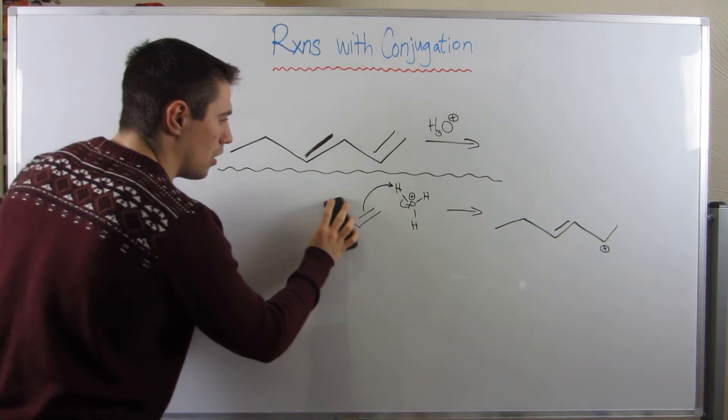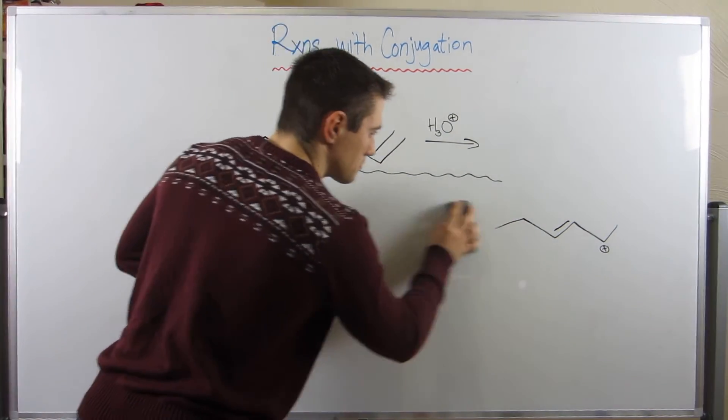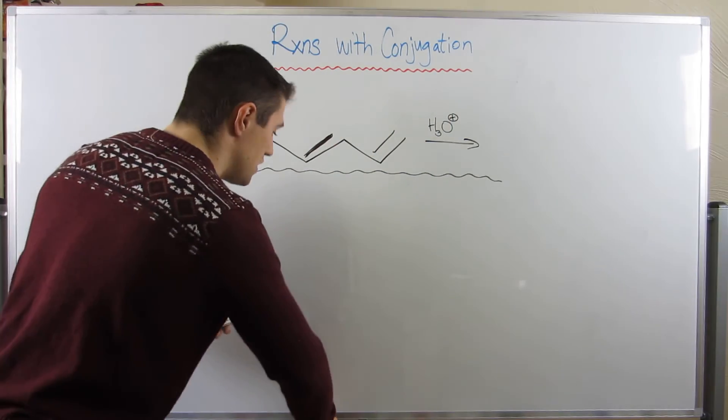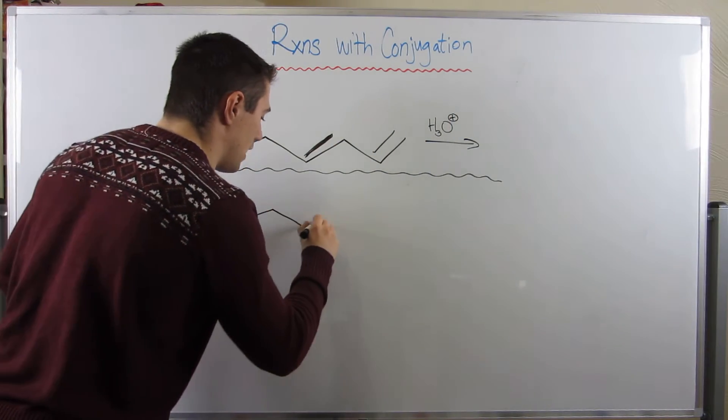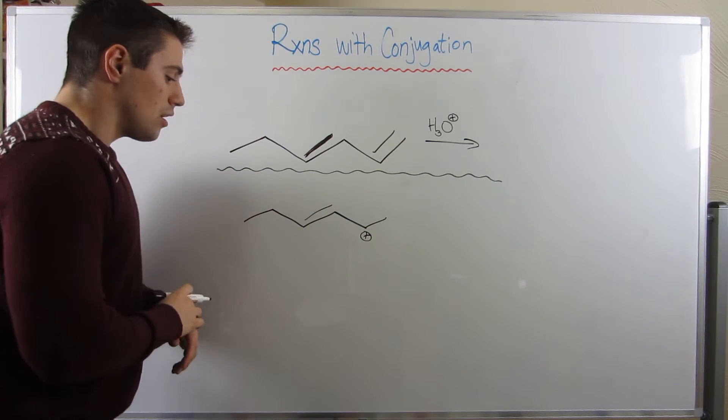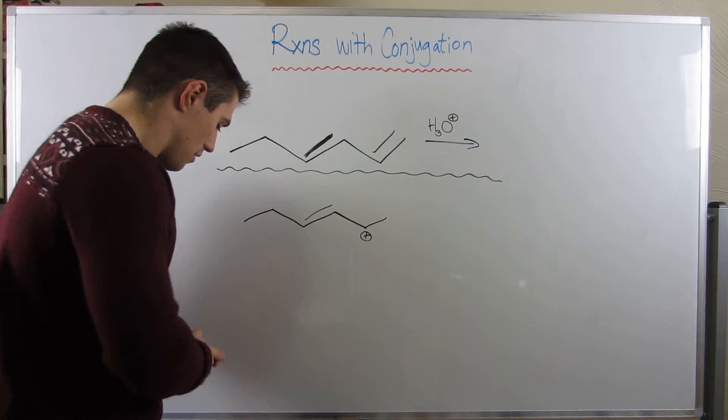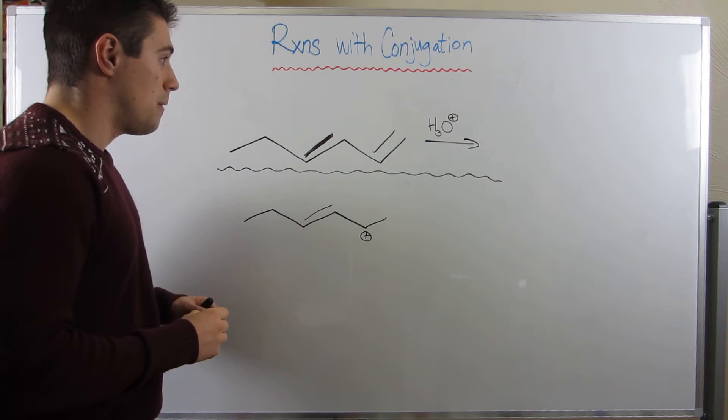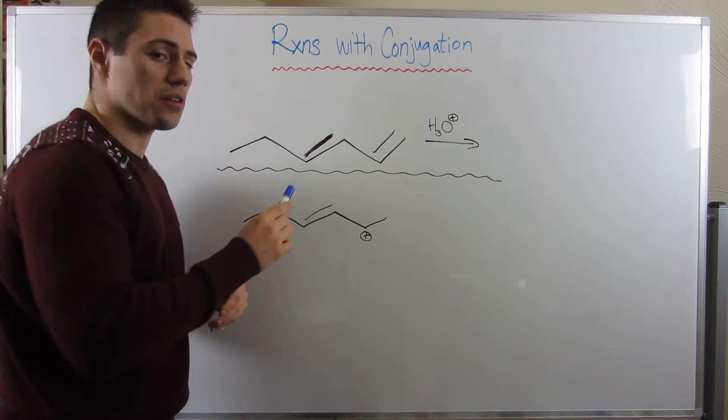However, not only do we have a secondary carbocation over here, but he's allylic, right? He's right next door to this double bond, which allows us to draw some resonance, which is kind of the key here. So, let me just kind of erase all of this. Actually, I'll just redraw. This will be the carbocation we generate.